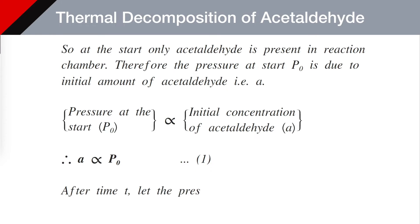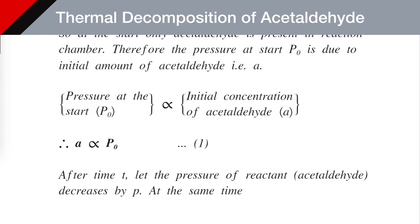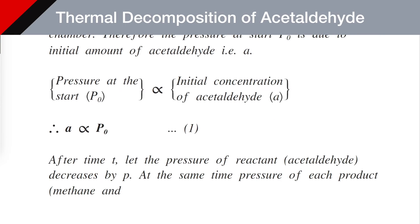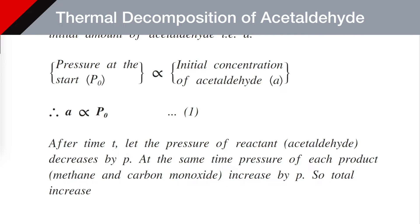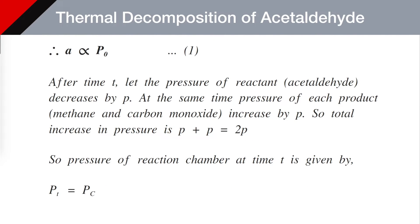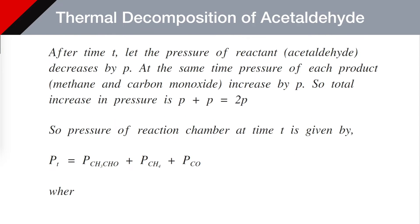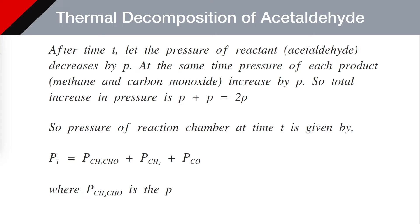After time T, let the pressure of the reactant, acetaldehyde, decrease by p. At the same time, the pressure of each product — methane and carbon monoxide — increases by p. So the total increase in pressure is p + p = 2p. The pressure of the reaction chamber at time T is given by Pt equals pressure by acetaldehyde plus pressure by methane plus pressure by carbon monoxide, where pressure by acetaldehyde equals P₀ minus p.